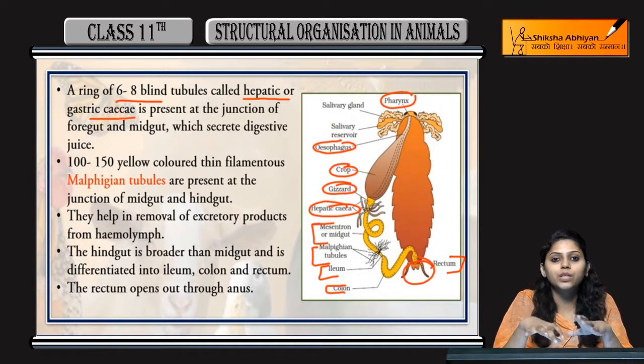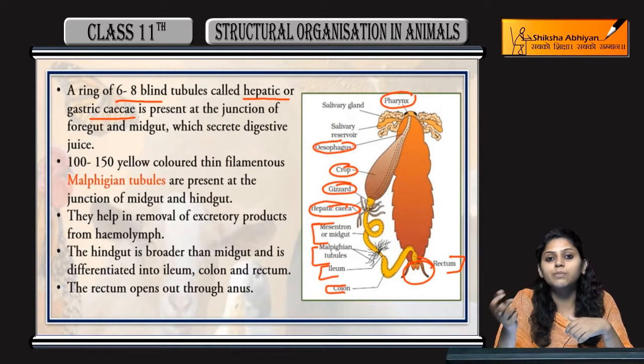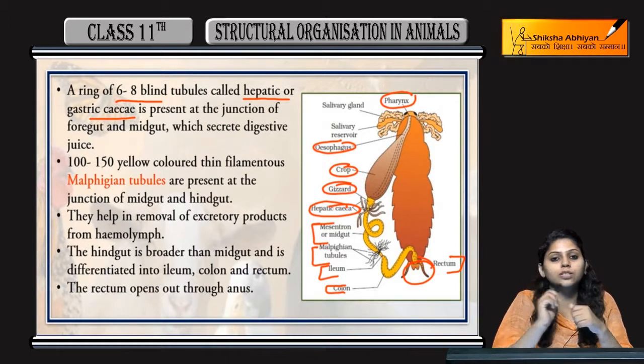So this was the alimentary canal. Now we will study the circulatory system in cockroaches.